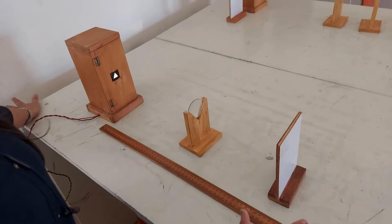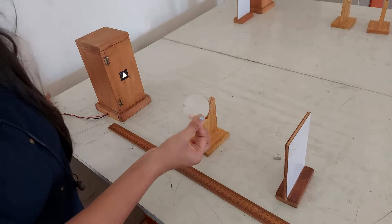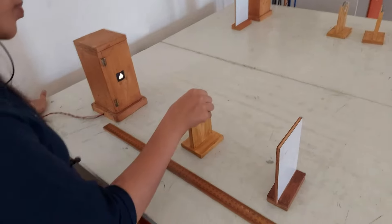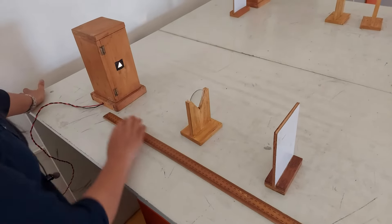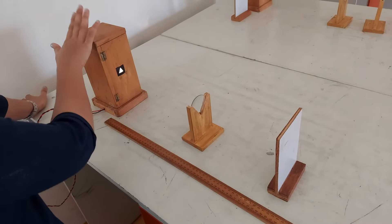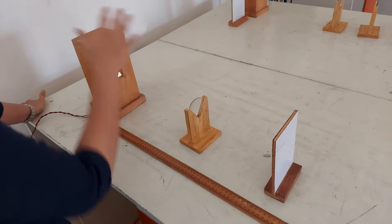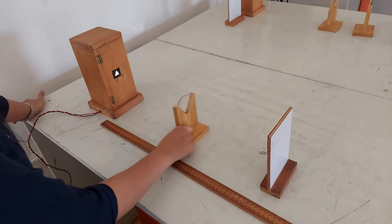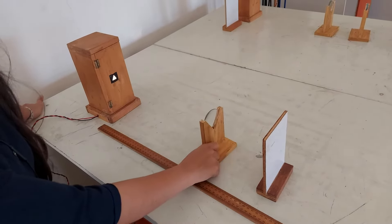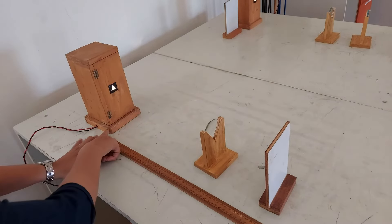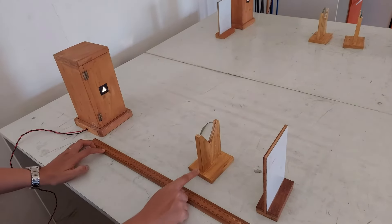To find the focal length of the convex lens, first you need a source. The source should be at different positions with respect to the lens, and you need to measure the distance between the lens and the source.